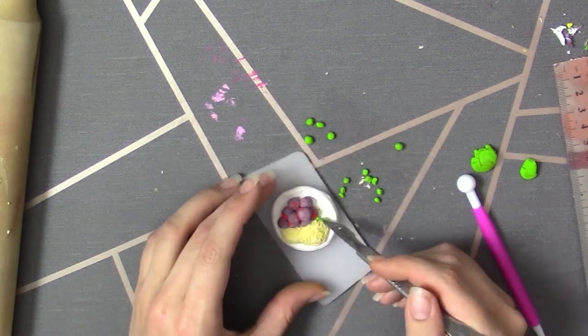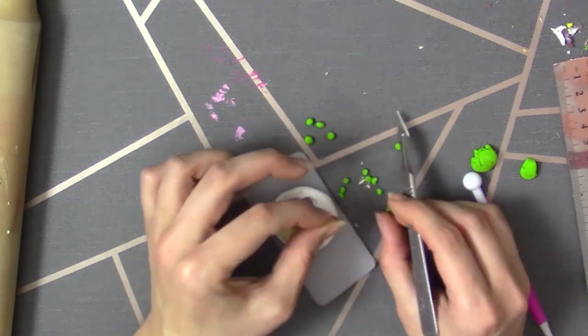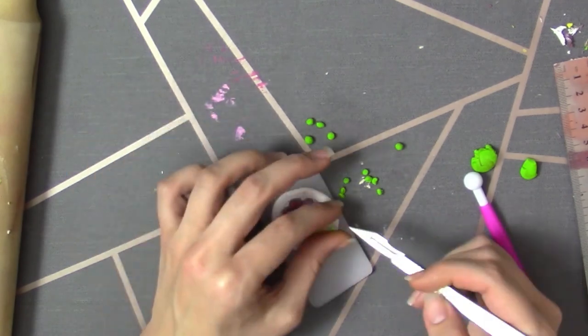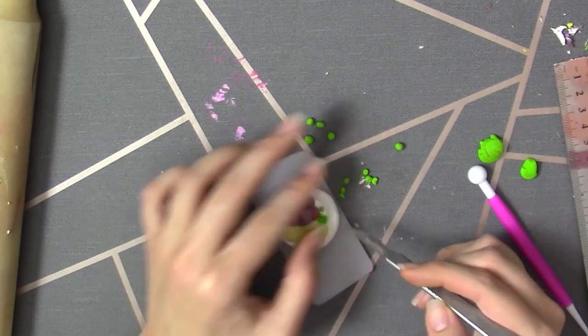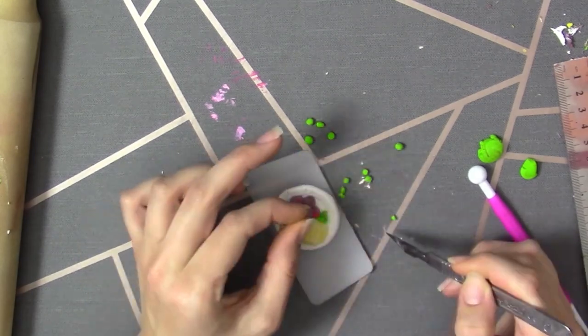I then moved on to making some peas. I just used some green polymer clay and made really tiny spheres, or balls, for the peas. I also stuck these onto the plate.